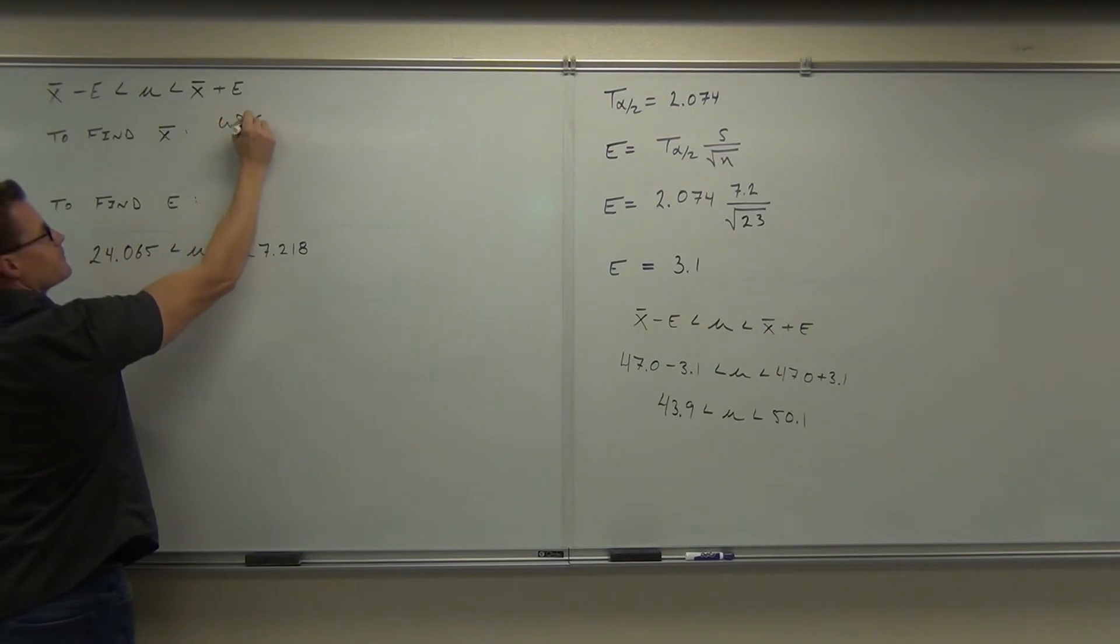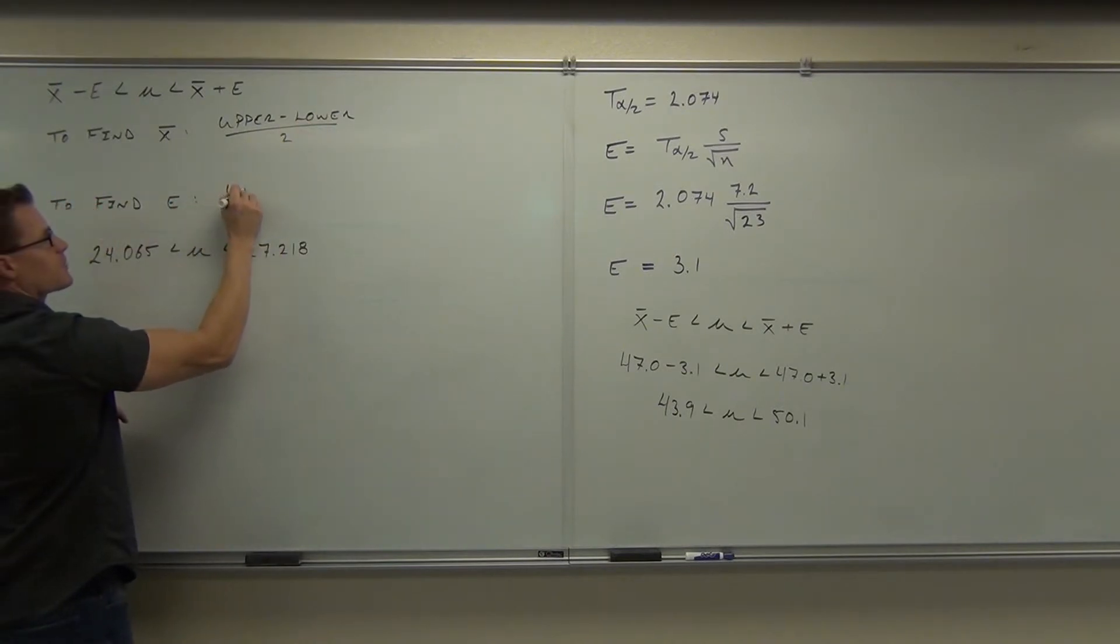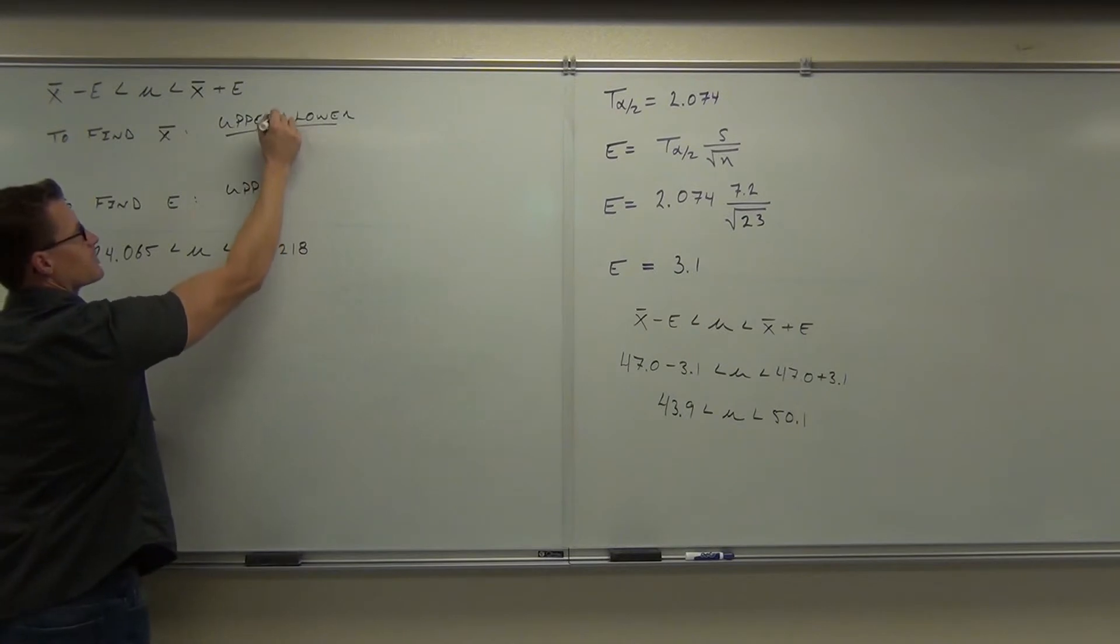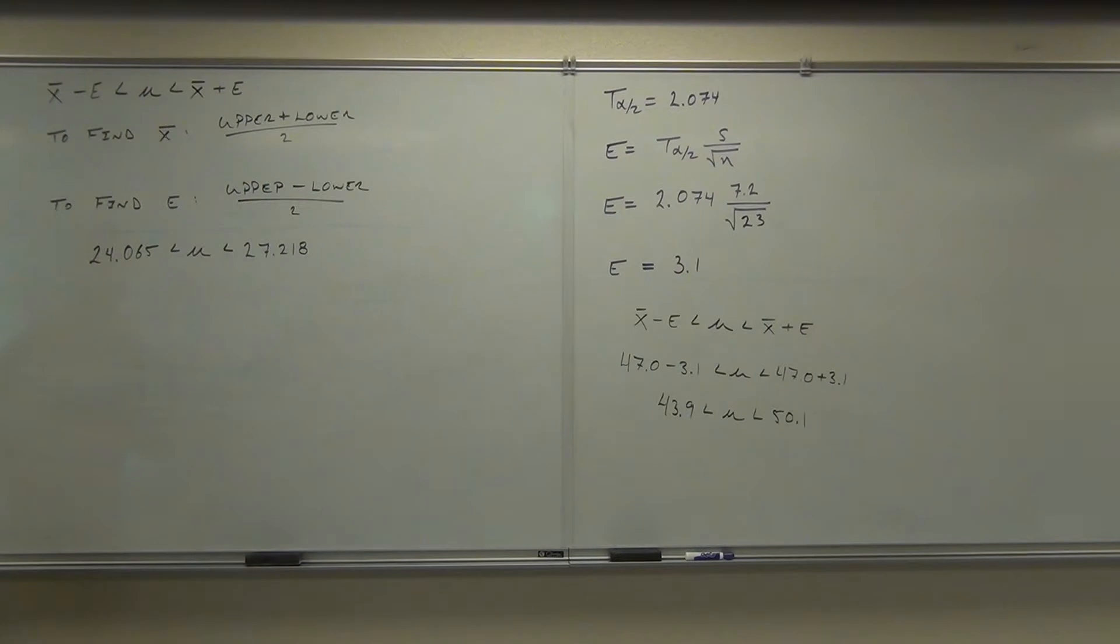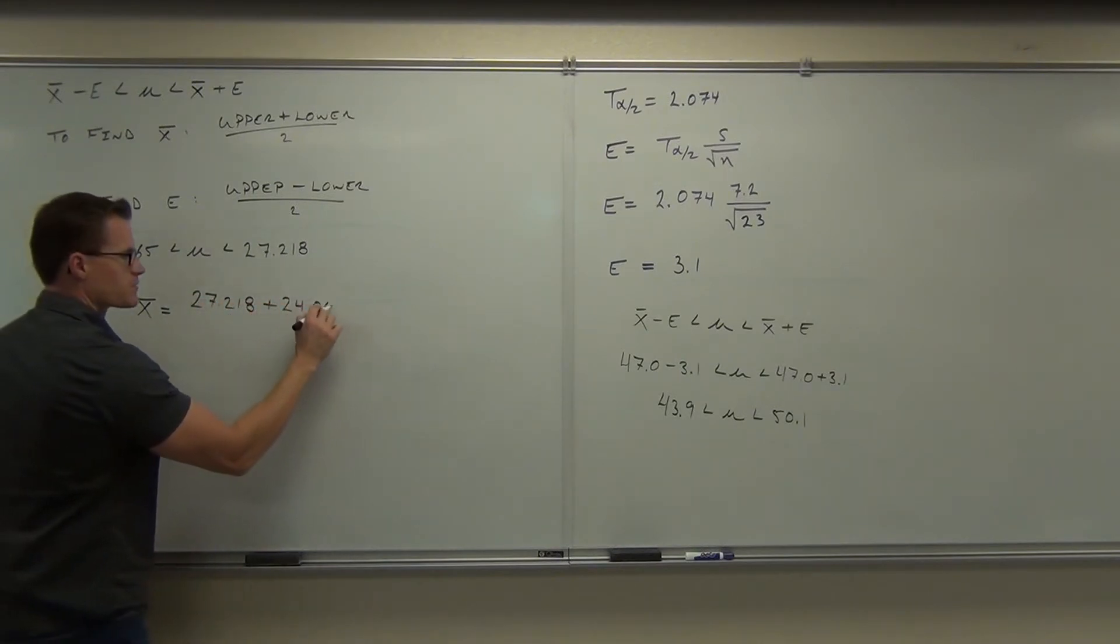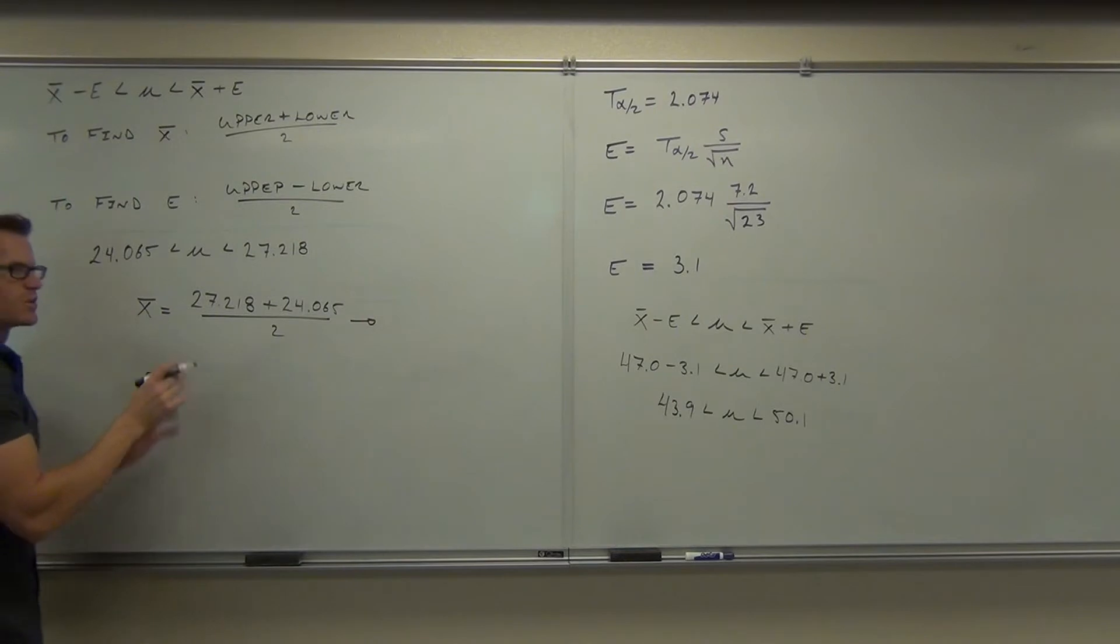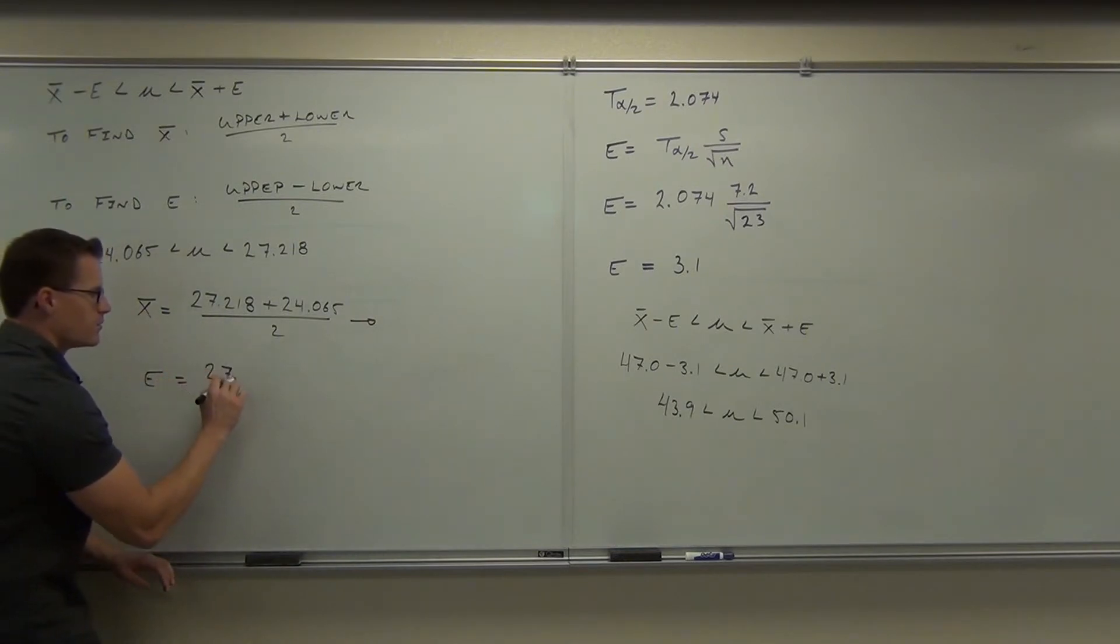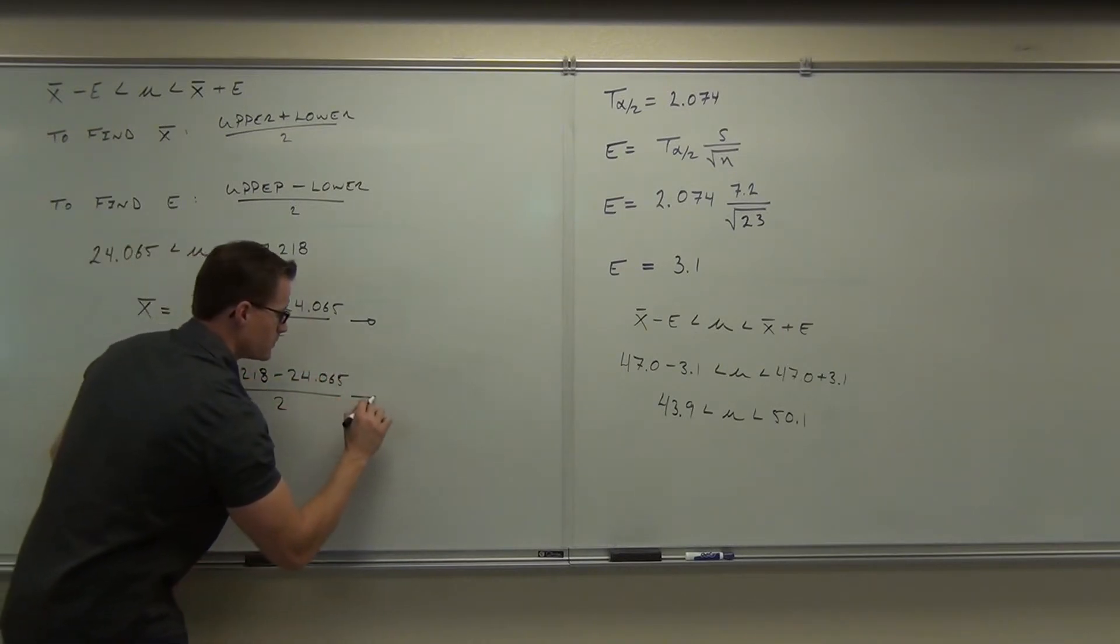To find E, you take the upper minus the lower and divide by two. So in our case here, we take 27.218 plus 24.065 and divide by two. That's going to give me X bar. To find the E, the maximum difference between those, that margin of error, you take the 27.218, you subtract the 24.065 and you divide by two. And that's going to give you your E.